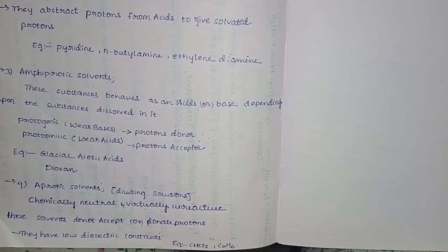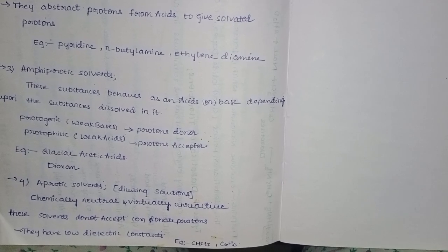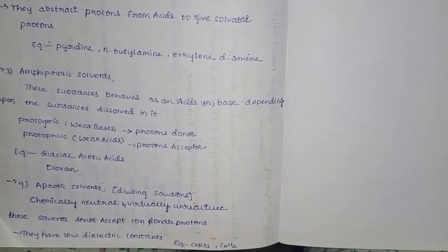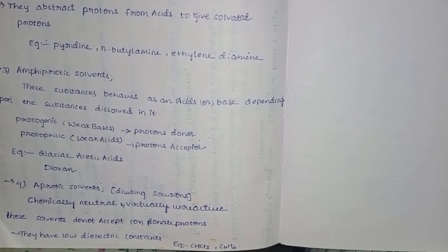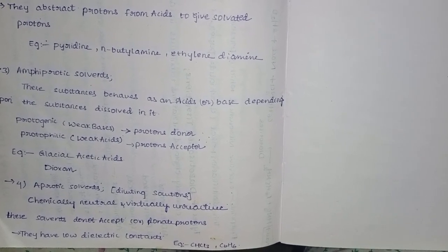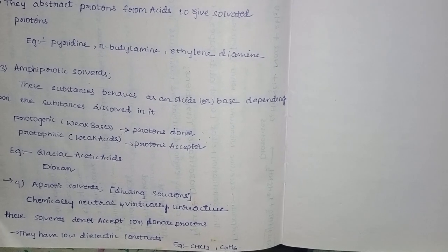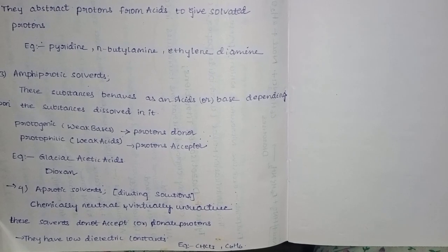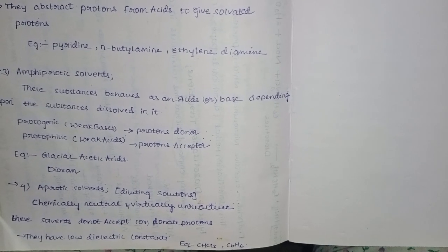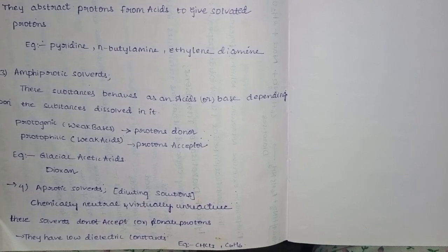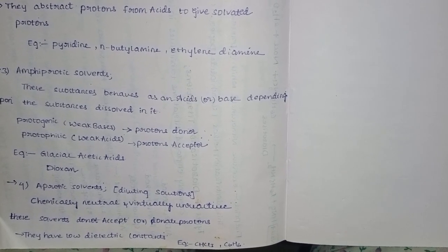Aprotic solvents are diluting solutions — they are used for dilution. They are chemically neutral and virtually unreactive. These solvents do not accept or donate protons. They have a low dielectric constant. Water has the highest dielectric constant and therefore the highest solubility activity. Examples of aprotic solvents include chloroform and benzene (C6H6).